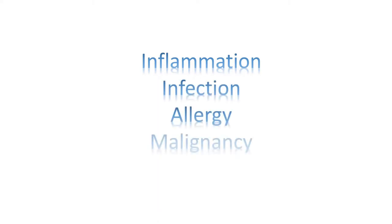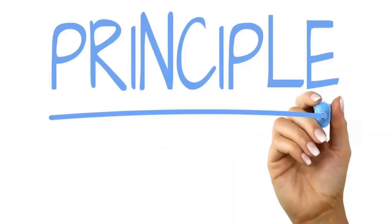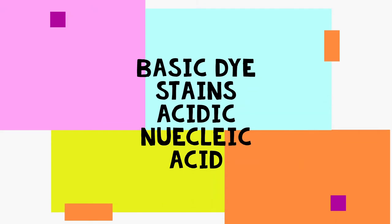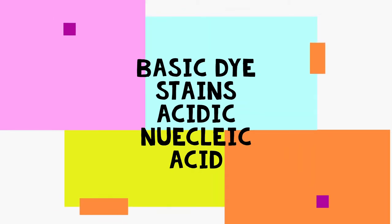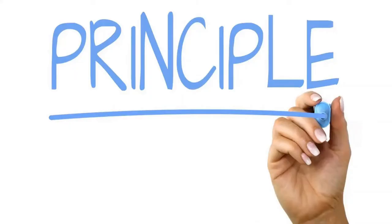The principle behind this experiment is that we collect the blood sample and stain the nucleus of the white blood cells. Since RBCs don't have a nucleus, they won't interfere with the staining, and we'll be able to stain all the white blood cells which have a prominent nucleus. We'll be using a basic dye such as Giemsa to stain the nucleic acid, which will give us a clear shape of the nucleus to observe.